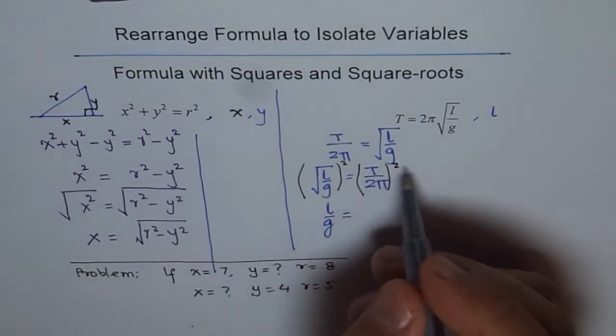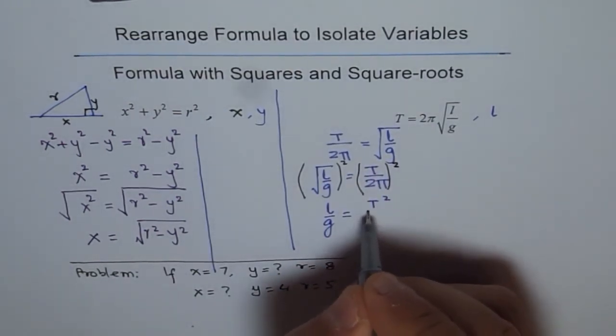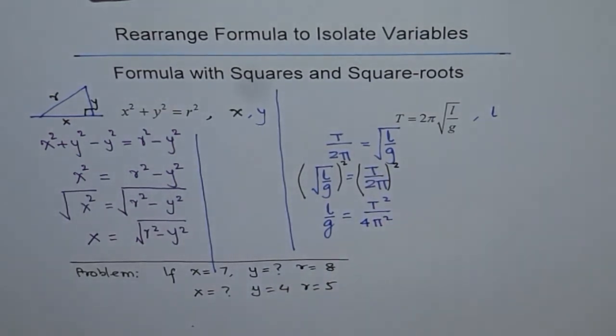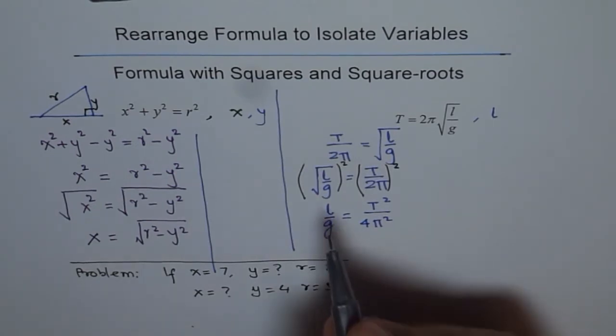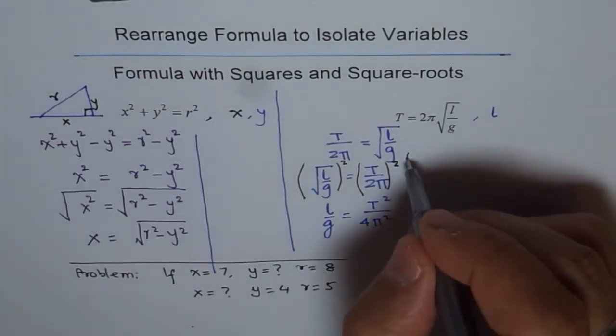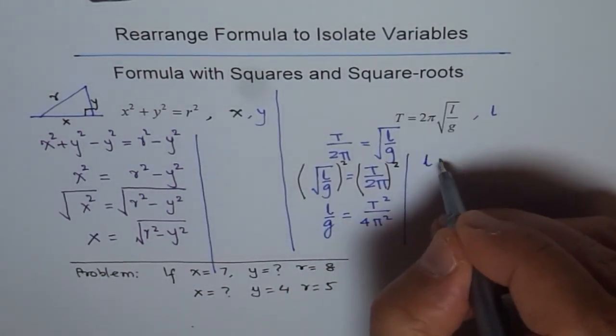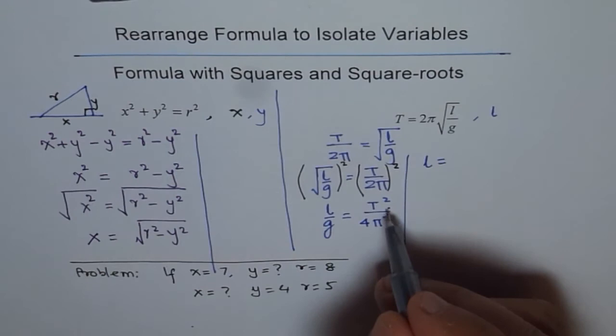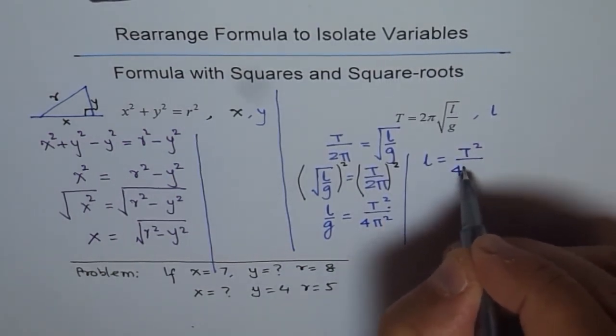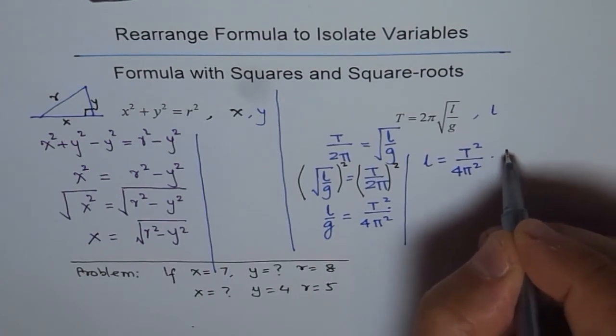So, we get T² over 4π². So, we get a relation between l over g and T² over 4π². Now, from here, you can find l or you can find g. So, let us first find l from here. So, l equals to multiply by g on that side. So, we get T² over 4π² times g.